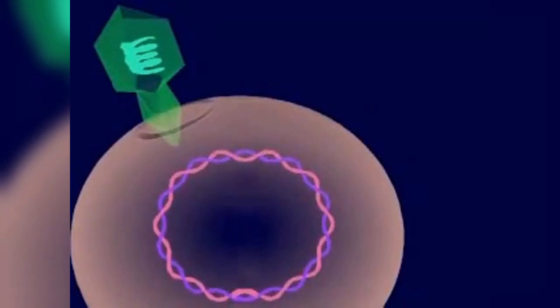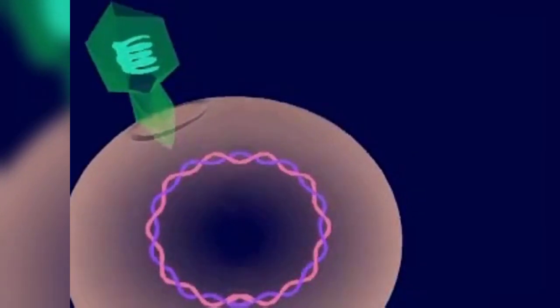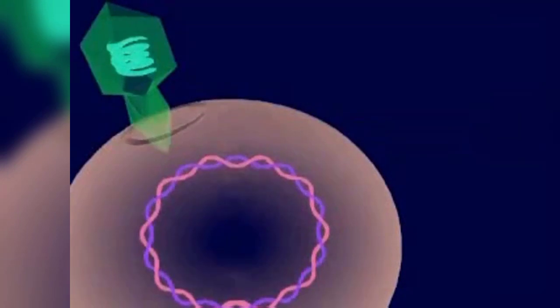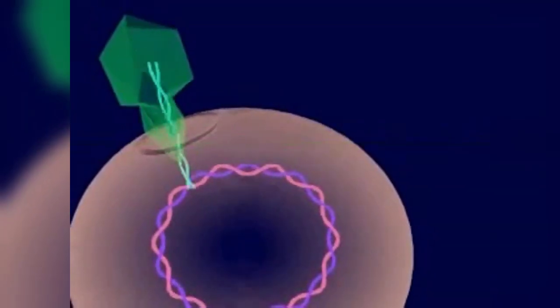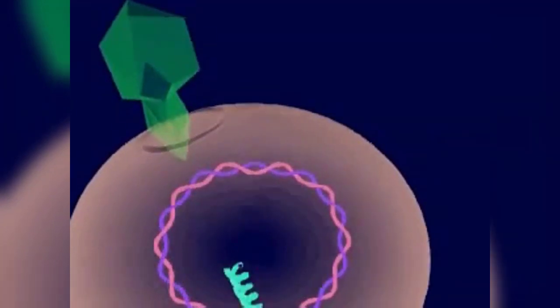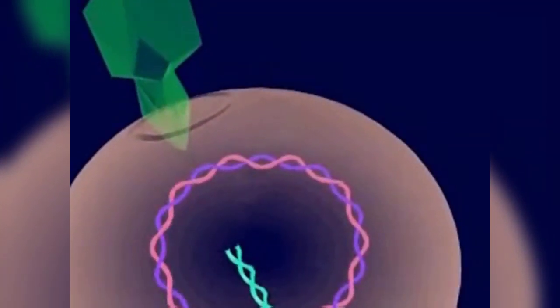A bacteriophage attaches to a bacterial host cell by locking onto a specific receptor site on the surface of the host cell. The virus then injects its DNA into the host cell.